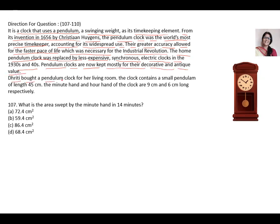Dhriti bought a pendulum clock for her living room. The clock contains a small pendulum of length 45 cm. The minute hand and hour hand of the clock are 9 cm and 6 cm long respectively. So this is the useful information you have to note. Length of the pendulum is 45 cm, minute hand is 9 cm and hour hand is 6 cm.